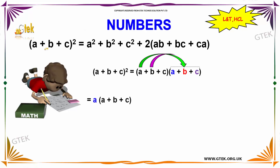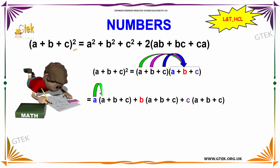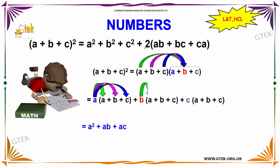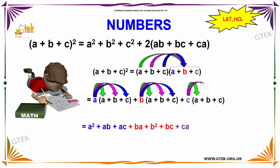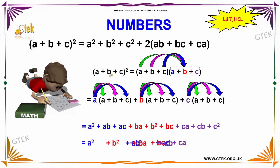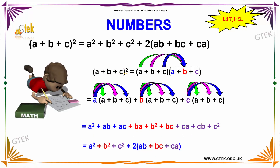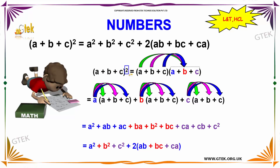So, a plus b plus c whole square is equal to a square plus b square plus c square plus 2 into ab plus bc plus ca. This is the actual formula. It comes from expanding a plus b plus c into a plus b plus c — which is two times of a plus b plus c multiplied together.